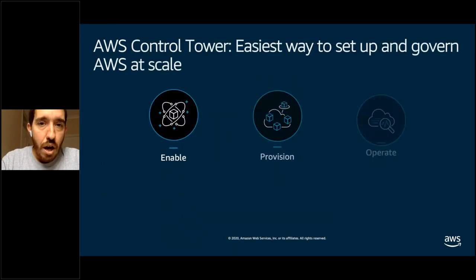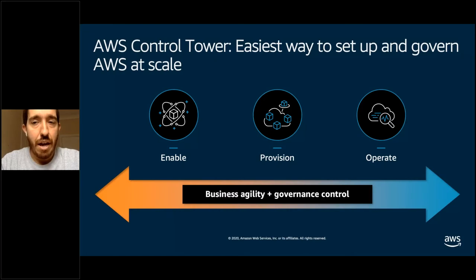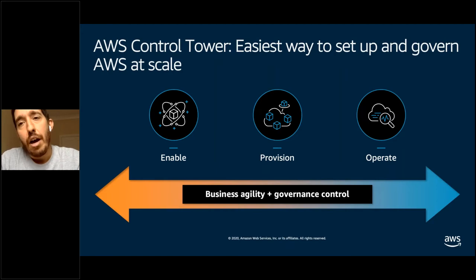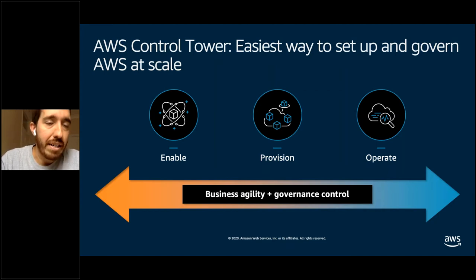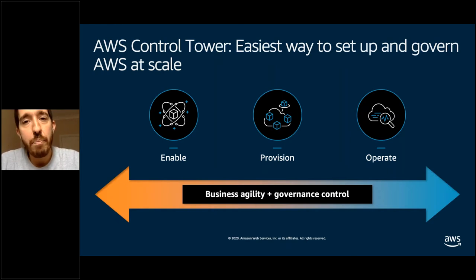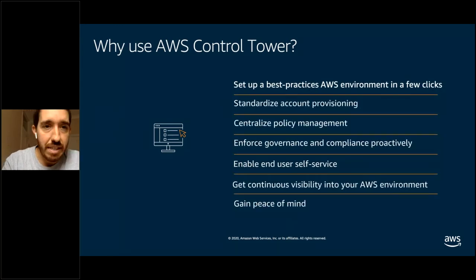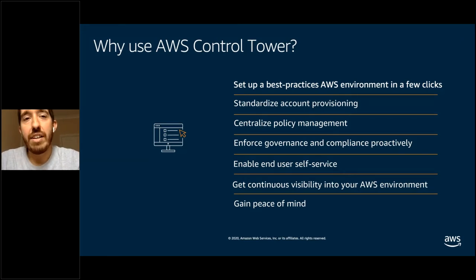What is Control Tower? It is a relatively new service, launched initially in 2019. It offers the easiest way for organizations to set up and govern an AWS environment at scale. With Control Tower, customers can enable, provision, and operate their environment for both business agility and governance at scale. Customers use it to set up a best practice AWS environment in a few clicks — actually two clicks — standardize account provisioning, centralize policy management, and enforce governance and compliance proactively. We'll see guardrails for that.